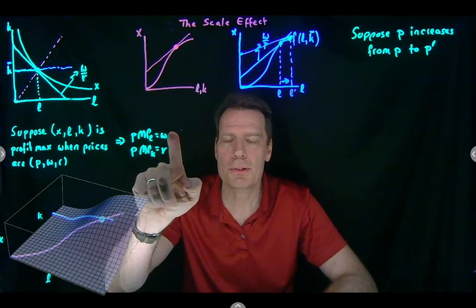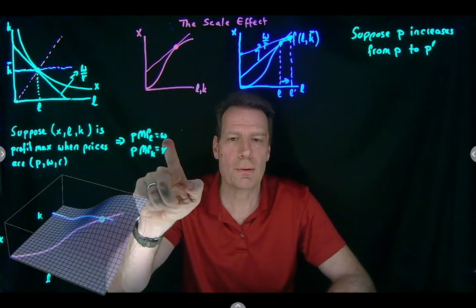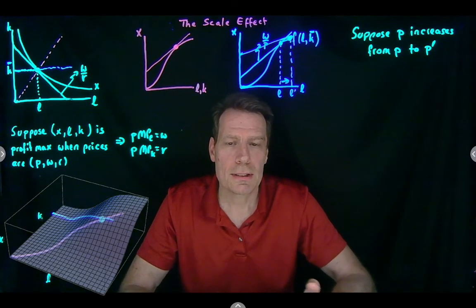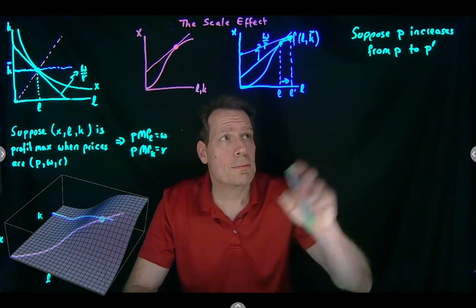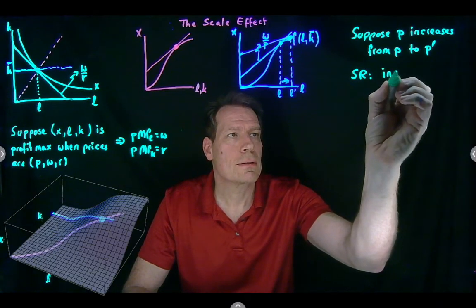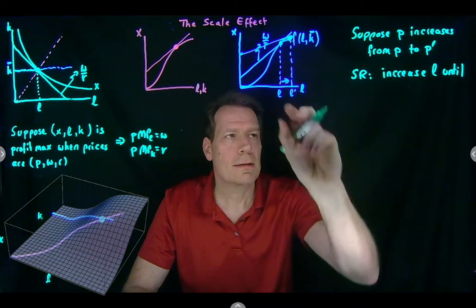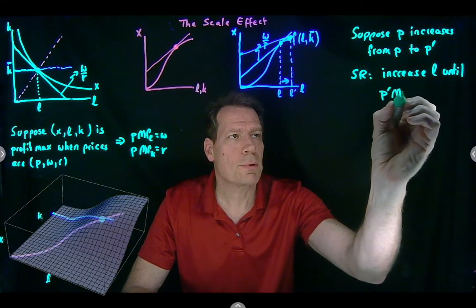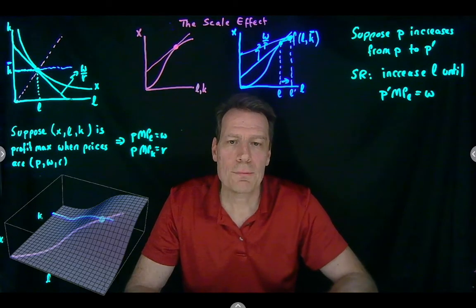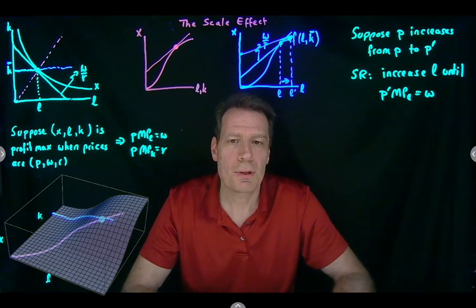We can see this must be the case by looking at the equation: if the price goes up, then the marginal revenue product of labor side goes up, but the wage hasn't changed, creating an inequality. The marginal revenue product of labor is now greater than the wage — the worker earns more in additional revenue than she costs us. Therefore we hire more workers, increasing labor until we reach a new tangency where the new price times marginal product of labor equals the wage.